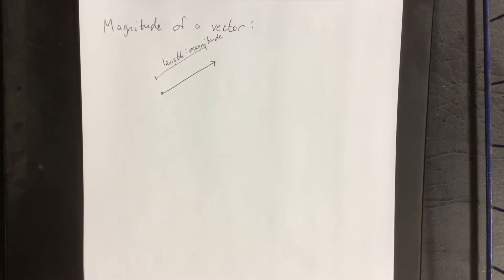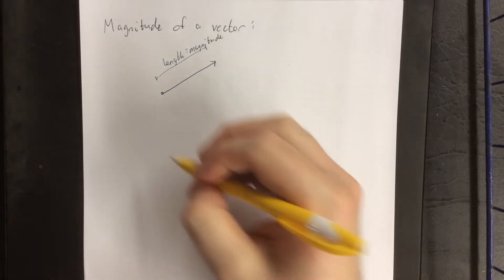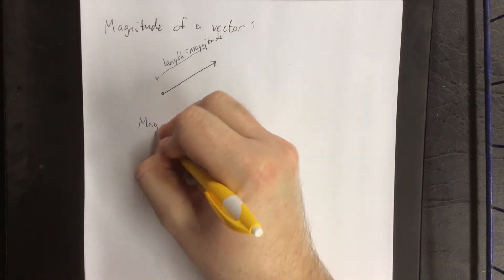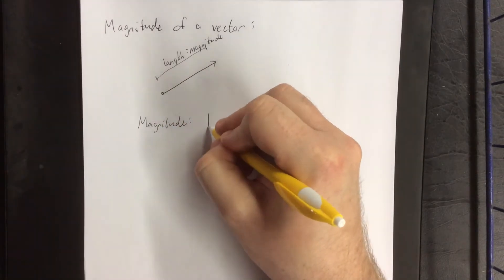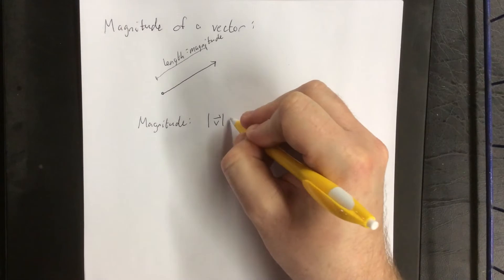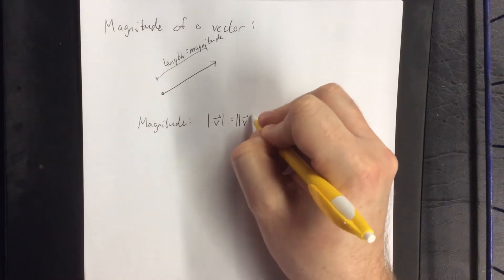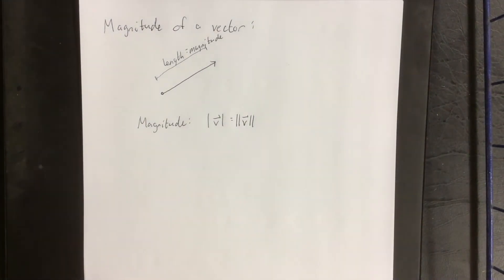Actually, let me double-check that. Depending on the textbook you're looking at, the magnitude of a vector could look like one of two different things: single absolute value bars or double absolute value bars. That depends on what textbook you're using.